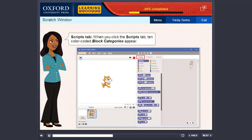Scripts Tab: When you click the scripts tab, 10 color-coded block categories appear. Each block category has its own block palette containing a set of blocks, programming codes.